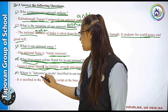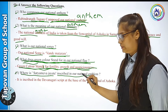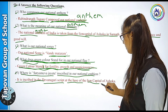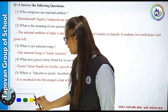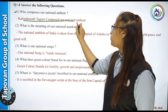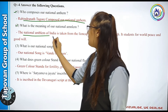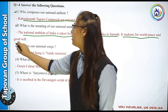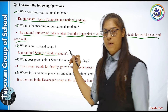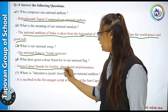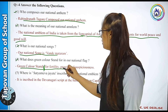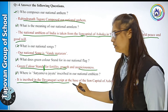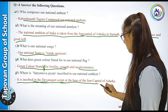Fifth: Where is Satyamev Jayate inscribed on our national emblem? It is inscribed in the Devanagari script at the base of the Lion Capital of Ashoka. Revision: First — Rabindranath Tagore composed our national anthem. Second — the national anthem is taken from the Lion Capital of Ashoka, Sarnath — it stands for world peace and goodwill. Third — our national song is Vande Mataram. Fourth — green color stands for fertility, growth and sustenance. Fifth — it is inscribed in the Devanagari script at the base of the Lion Capital of Ashoka.